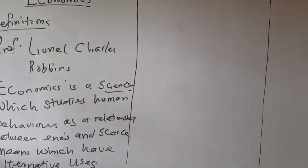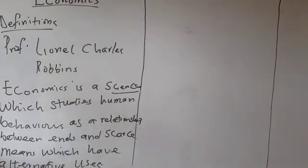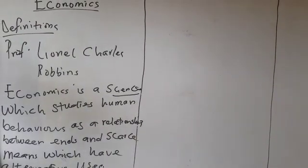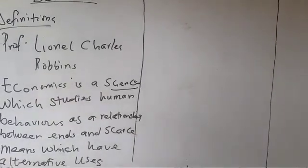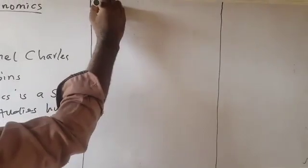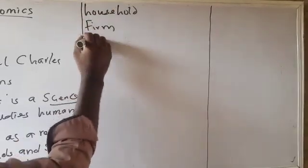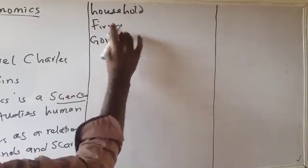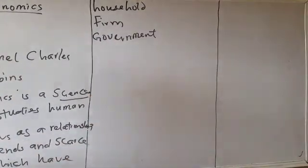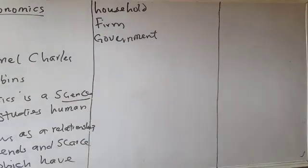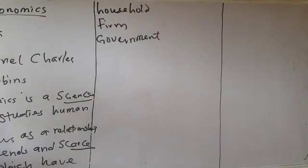If you look at this definition, this definition actually explains how all the units of economy are actually operating in terms of the available resources and human wants. These units of economics we are talking about, we talk about household, we talk about firm, and we talk about government. These three units of economics are always faced with the problem of scarce means.